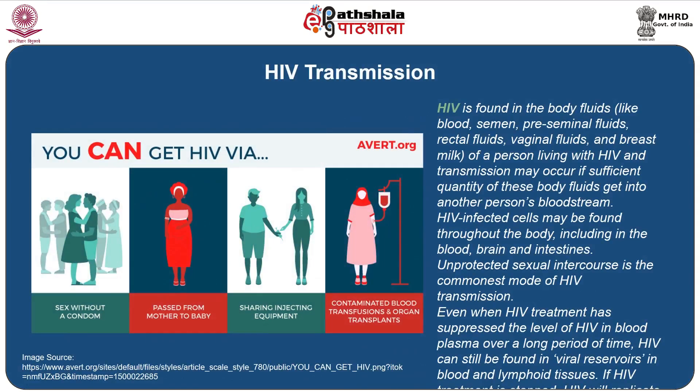Now let us look at HIV transmission. HIV is found in the blood fluids of a person living with HIV and transmission may occur if sufficient quantity of these blood fluids gets into another person's bloodstream. HIV infected cells may be found throughout the body including in the blood, brain and intestine. Unprotected sexual intercourse is the commonest mode of HIV transmission. Even when HIV treatment has suppressed the level of HIV in blood plasma over a long period of time, HIV can still be found in viral reservoirs in blood and lymphoid tissue. If HIV treatment is stopped, HIV will replicate again.